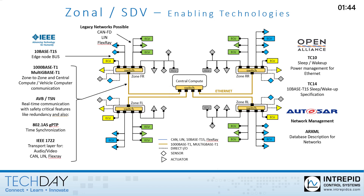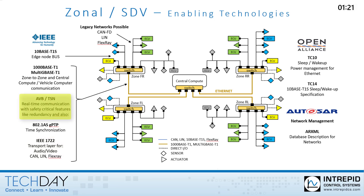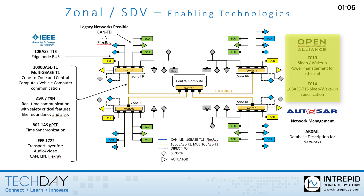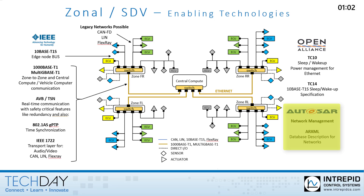Numerous Ethernet protocols also exist for automotive applications, including gPTP, which enables time synchronization across an entire network with accuracies lower than one microsecond. Transport layers such as IEEE 1722 enable audio/video data as well as legacy network data like CAN-FD, LIN, and FlexRay to be transported across the network. Other AVB and TSN family of protocols enable real-time communication on Ethernet with safety-critical options like redundancy. Open Alliance has standardized methods such as TC10 and TC14 for ECUs to sleep and wake up for power management. Adaptive AutoSAR and Classic AutoSAR enable software from multiple vendors to coexist and function inside Linux-based ECUs or ECUs with other real-time operating systems — a necessary part of a central compute module.